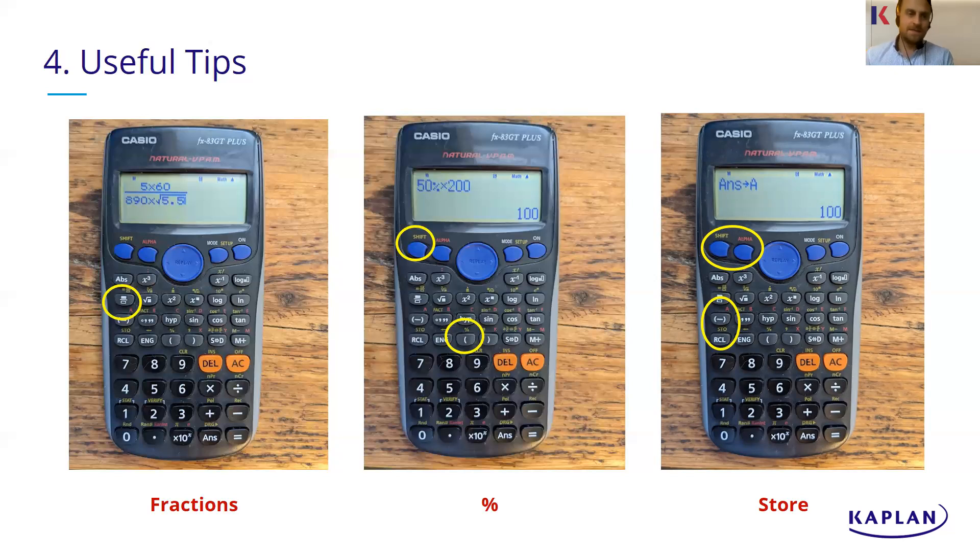The third one's maybe a little bit more advanced. You may not have heard of this one. It's this, you can store numbers in your calculator, which does work if you're doing a process or if there's something that's a bit more complicated, you need to save some numbers to use later. And I really like this.